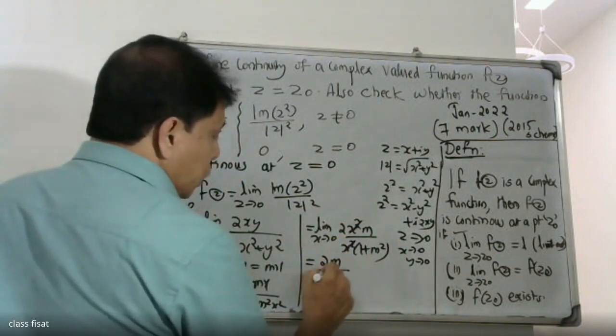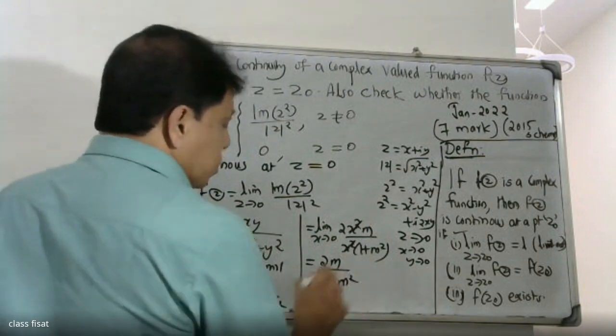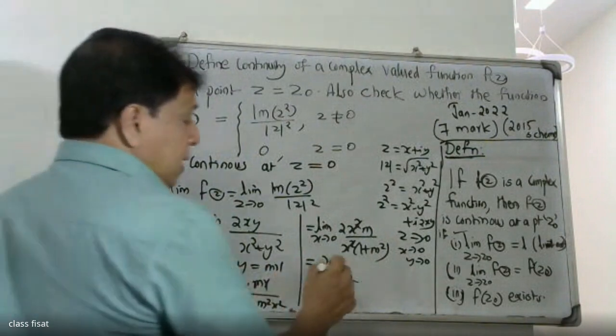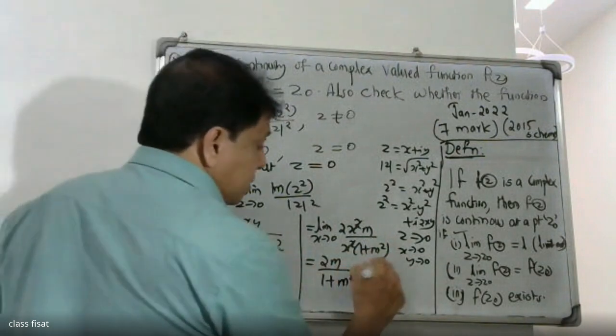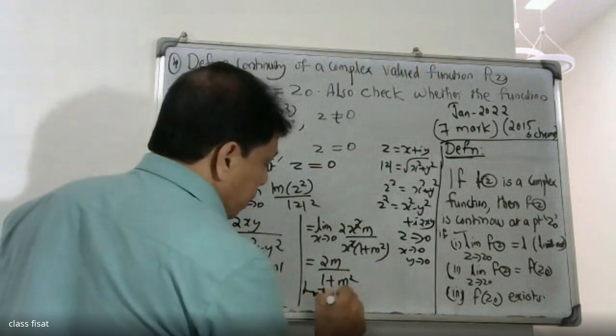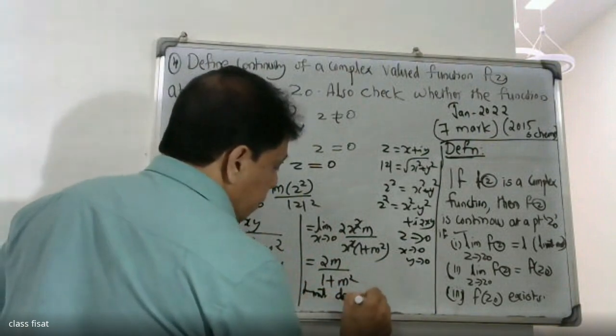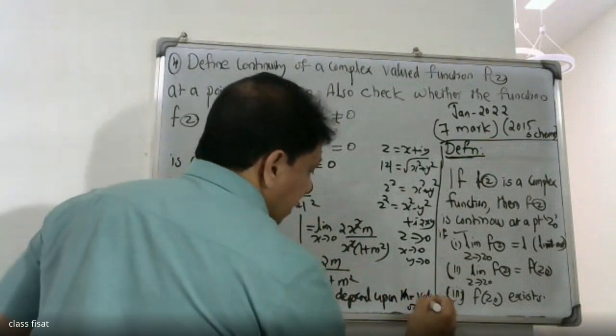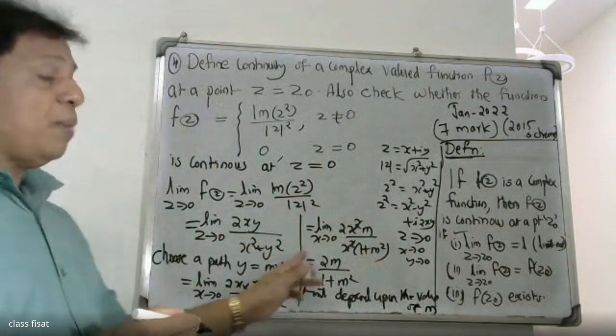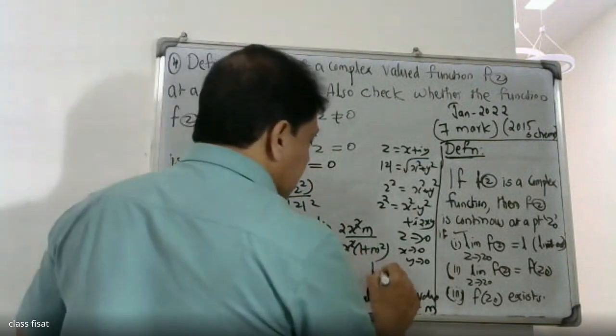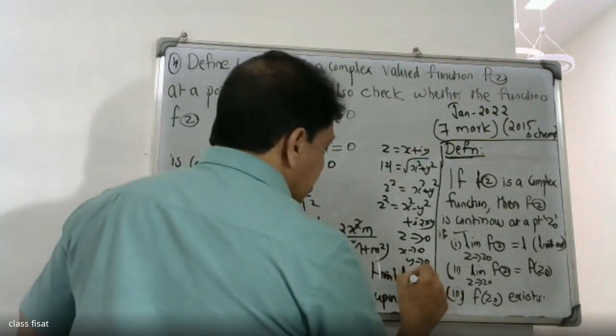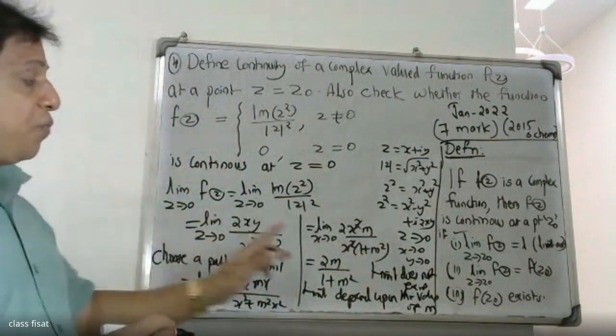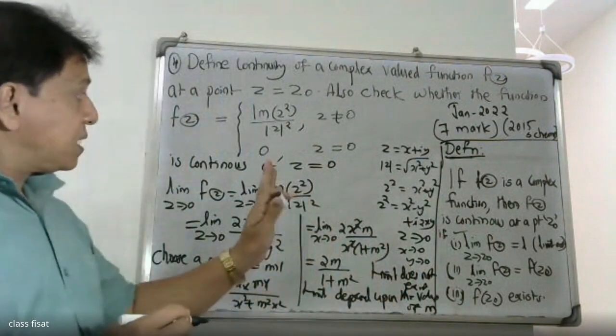As x tends to zero, this equals 2m divided by 1 plus m². Since this depends on m, the limit is not unique. Therefore, the limit does not exist. The first condition fails.